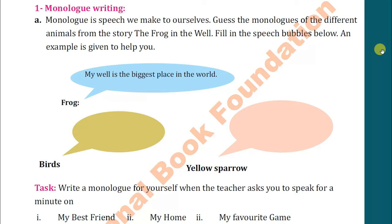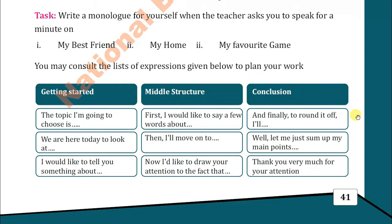Then we come to the task: write a monologue for yourself when the teacher asks you to speak for a minute on 'My Best Friend,' 'My Home,' or 'My Favorite Game.' You may consult the list of expressions given below to plan your work. To start, you can say: 'The topic I am going to choose is...' or 'I would like to tell you something about...' In the middle, you can say: 'First, I would like to say a few words about...' then 'I'll move on to...' or 'Now I'd like to draw your attention to the fact that...'